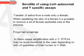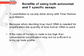The transfer of saliva from a male onto a female — when swabbing the skin of a female, it is possible to remove a lot of female epithelial cells in the process — and also with fingernail scrapings. In these cases, amplification with a Y-STR kit may be more beneficial to the case depending on the ratio of quantities of total human to Y-DNA. Y-quantitation is usually done along with total human quantitation, because when deciding how much DNA is needed for amplification, the quantity of total human DNA is used. If the ratio of human to male is too high, then conventional amplification may not be sufficient to bring up the male profile.